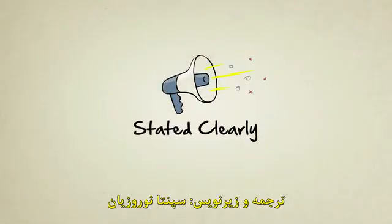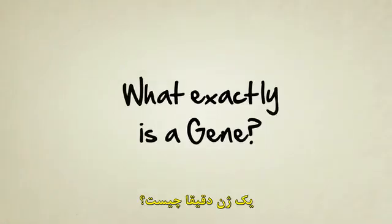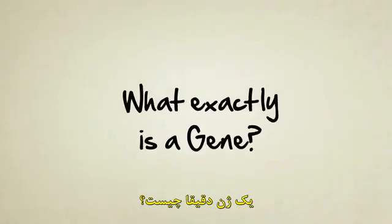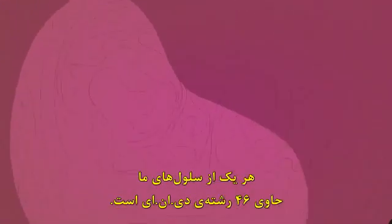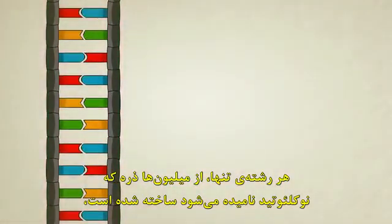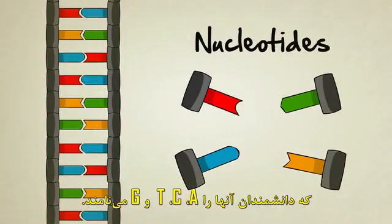Stated Clearly presents: What exactly is a gene? Each one of our cells contains 46 strands of DNA. A single strand is made of millions of particles called nucleotides, and these nucleotides come in four different types, which scientists have labeled A, C, T, and G.